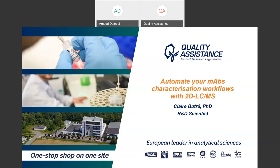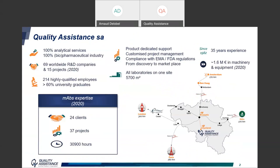Today I will present data obtained on our 2D LC-MS system, entitled 'Automate Your mAbs Characterization Workflows with 2D LC-MS.' Quality Assistance is a contract research organization located in the French part of Belgium, close to the French border. We are now more than 200 employees dedicated to providing pharma companies with analytical services. All our labs are on one site, facilitating logistics and sample handling. We work in compliance with current regulations — for instance, we dealt with 37 projects related to antibodies in 2020.